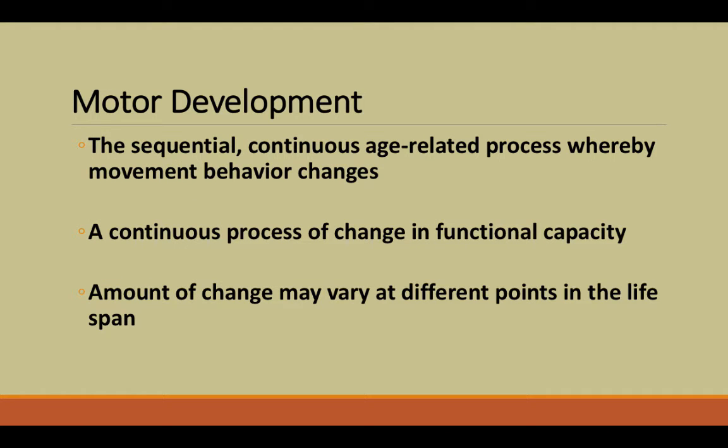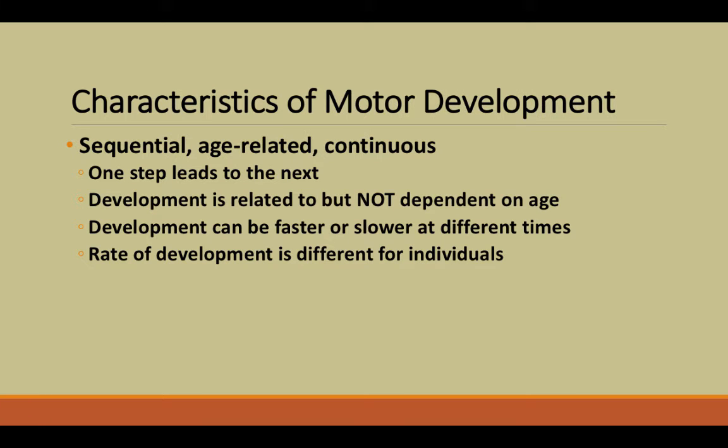When defining the main concepts, the first is motor development. Motor development is the sequential, continuous, age-related process whereby movement behavior changes. It's a continuous process of change in functional capacity, and the amount of change may vary at different points in the lifespan. Motor development is how we change our movements as we progress throughout our lifespan. Characteristics of motor development are that it's sequential, age-related, and continuous.